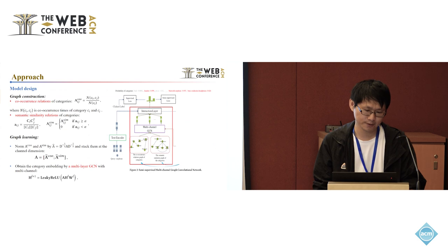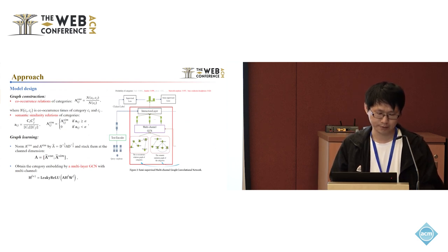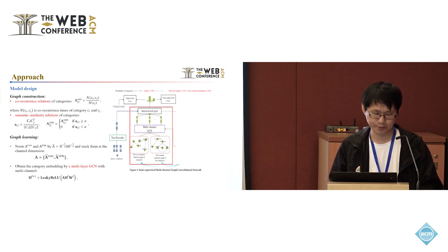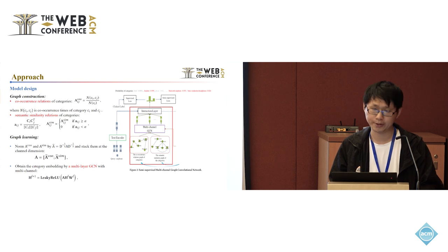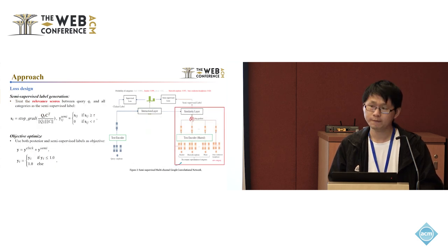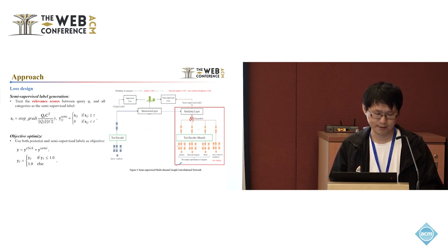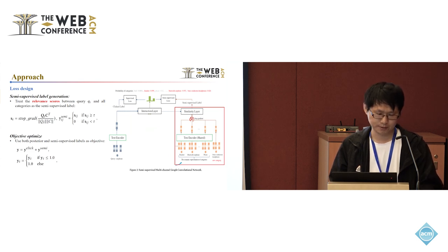For model design, we first construct the co-occurrence graph by conditional probability of categories and construct a semantic similarity graph by cosine similarity of categories. Then we normalize and stack both adjacency matrices and use a multi-layer GCN to learn the category embeddings. For loss design, we compute the relevance scores between queries and all categories as semi-supervised labels, then combine the semi-supervised labels with the posterior data and use both for model optimization.